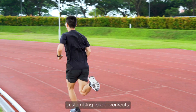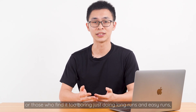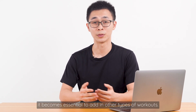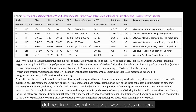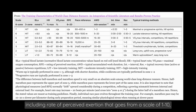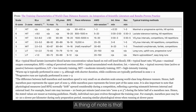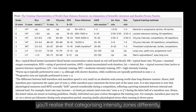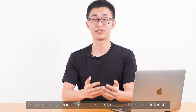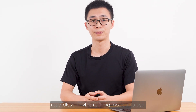We come to step 4: customizing faster workouts. For those looking for a personal best or who find it too boring doing only long runs and easy runs, it becomes essential to add in other types of workouts. I'm referencing the intensity zones defined in a recent review of world-class runners. This was developed after considering different ways to categorize intensity levels, including rate of perceived exertion on a scale of 1 to 10 and heart rate zones. Although researchers split workout intensity into a 3-zone and 7-zone model, categorizing intensity zones differently doesn't matter as much as understanding the research findings — because once you know the training rationale, you know which intensity to run at, regardless of which zoning model you use.